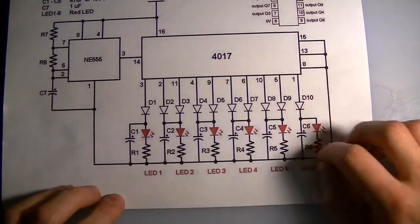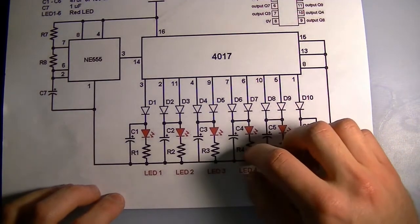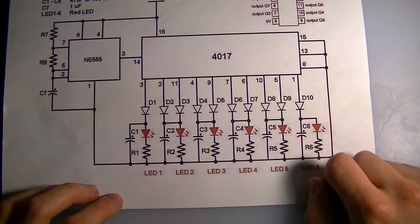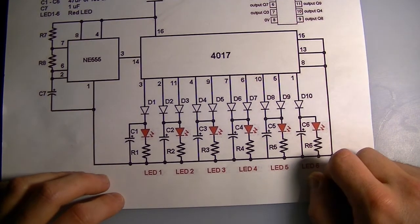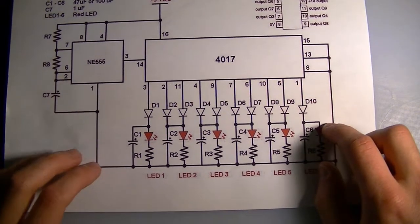So I got rid of the transistors. Just the capacitors right across the diode and limiting resistor was enough to produce the fading LED effect that we needed, and it reduced the complexity of the circuit quite a bit.